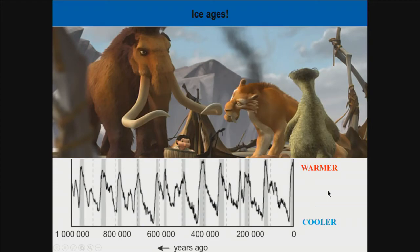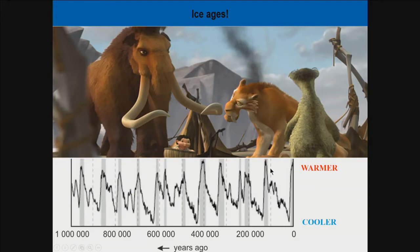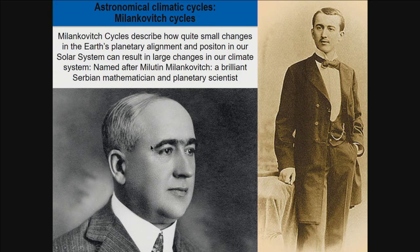So how do we know about these astronomical climate cycles? We know because of Milutin Milanković — a brilliant Serbian mathematician and planetary scientist. He identified that small changes in the Earth's planetary alignment and position in the solar system can have large effects on our climate system here on Earth. A lot of his work was mathematical; he came up with the idea around 110 years ago.